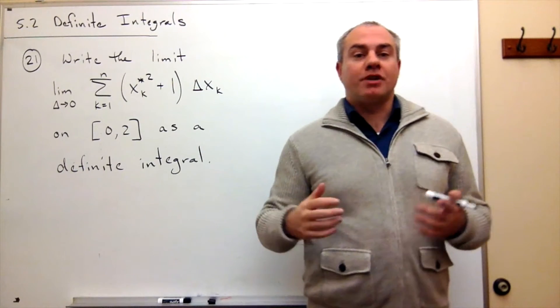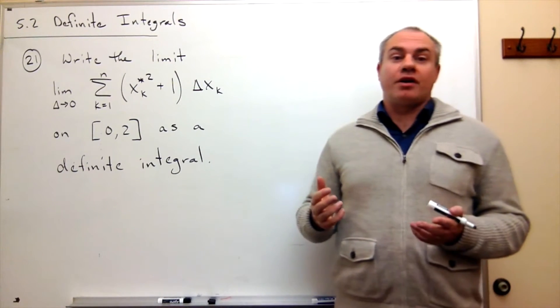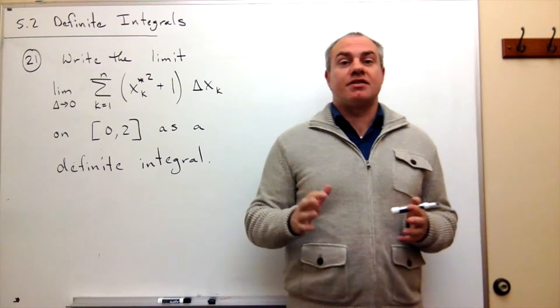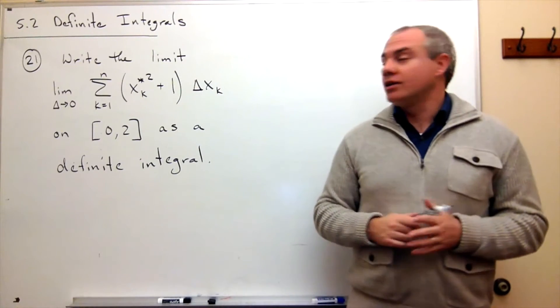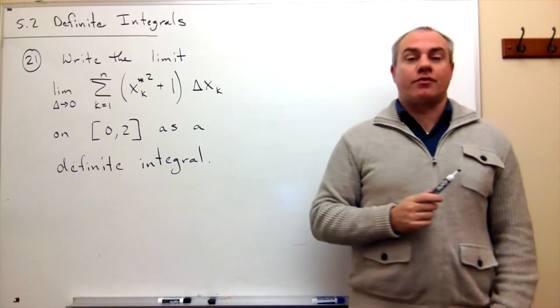So this problem is fairly straightforward. We just have to recognize the different pieces that make up a definite integral as it relates to this Riemann sum.